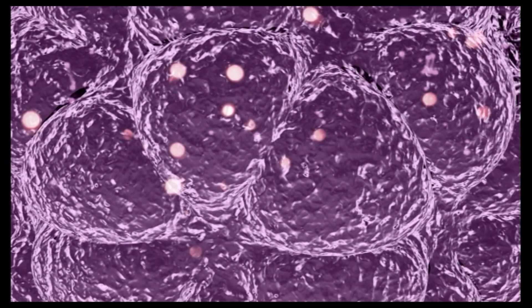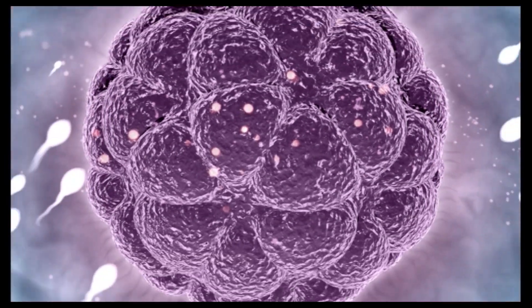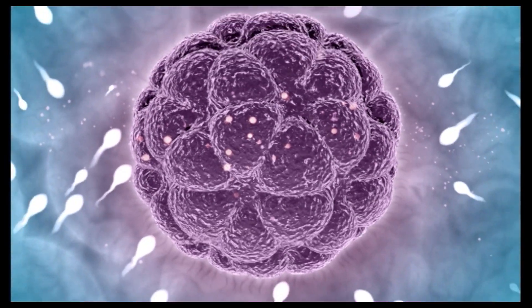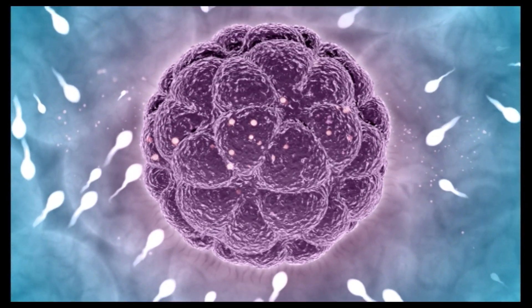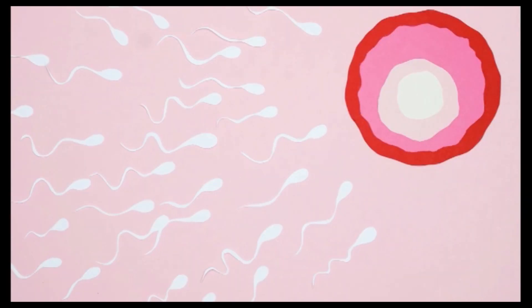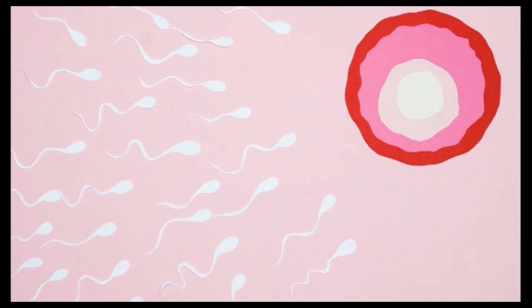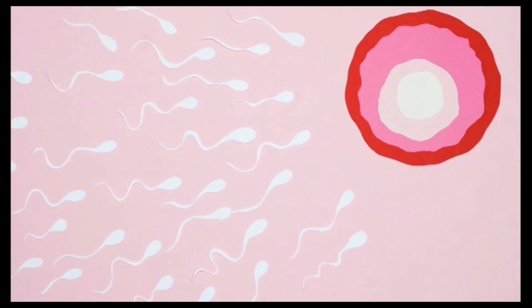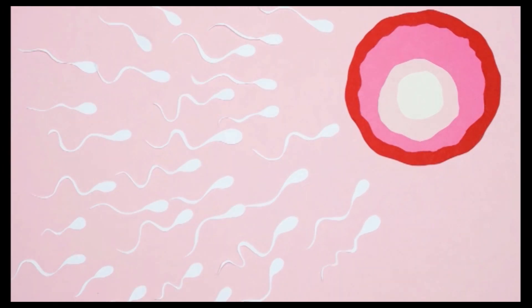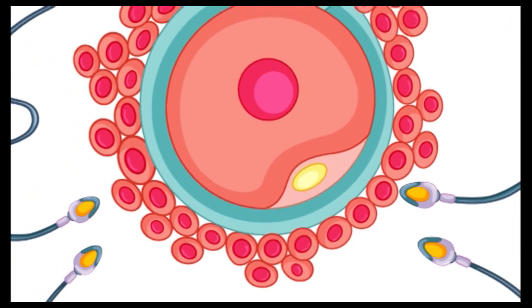Egg has 22 autosomes and 1 allosome, which is nothing but X. During intercourse, sperm and egg meet together. This process of meeting is called fertilization. Sperm fuses with the egg and forms a zygote. The zygote is the single-celled baby.